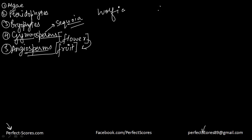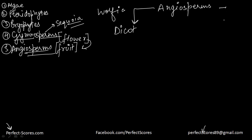Angiosperms are divided into two groups: dicotyledons and monocotyledons. Monocotyledons means one cotyledon in their seeds, and dicotyledons means two cotyledons in their seeds.